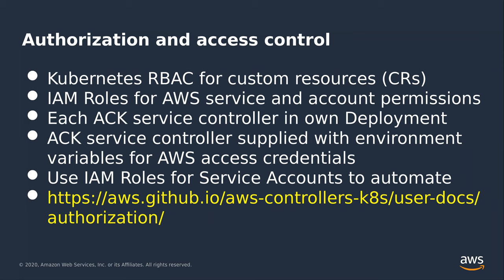We recommend using Pod IRSA — IAM Roles for Service Accounts — as our recommended way of providing fine-grained IAM permissions for a specific pod. This is in contrast to the default setup where the IAM role associated with the worker node the Kubelet is running on is used by default for pods. With Pod IRSA, you can associate an IAM role to the service account that a specific pod is running as. That IAM role is used in the ACK service controller to determine the IAM policy it has in order to make calls to the AWS RDS API.